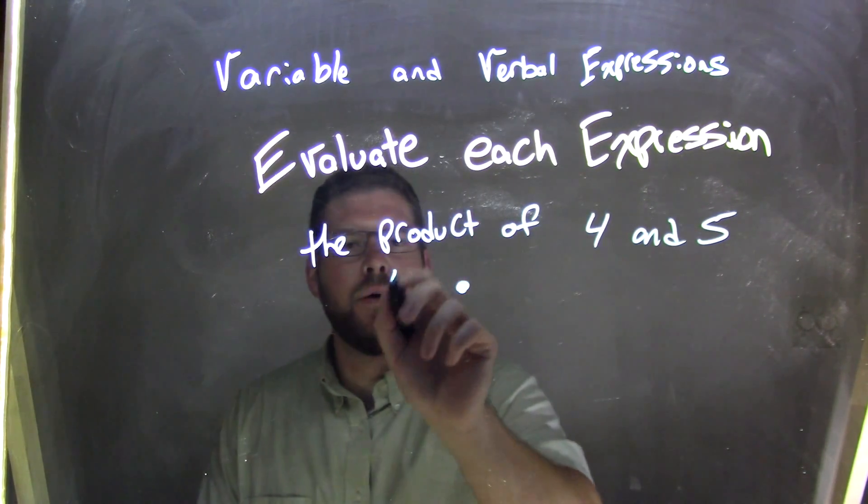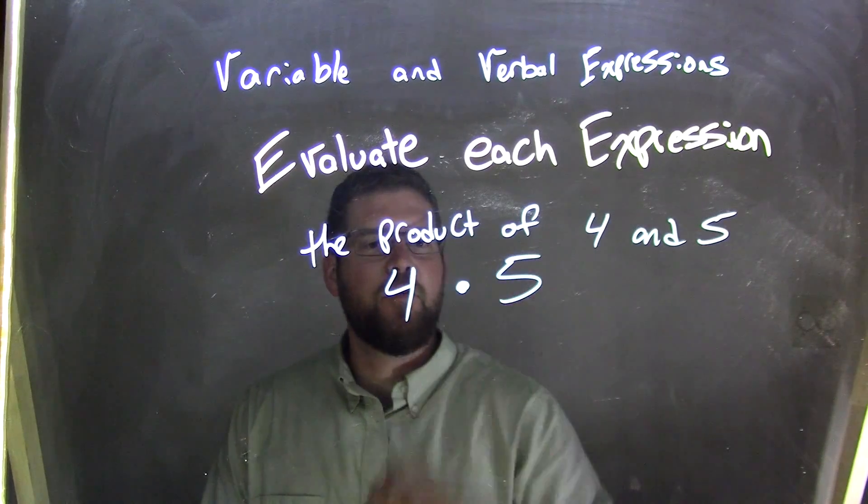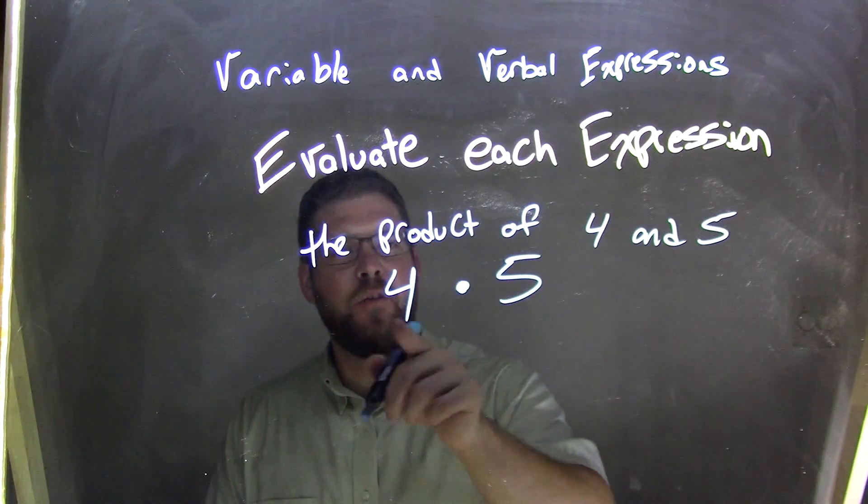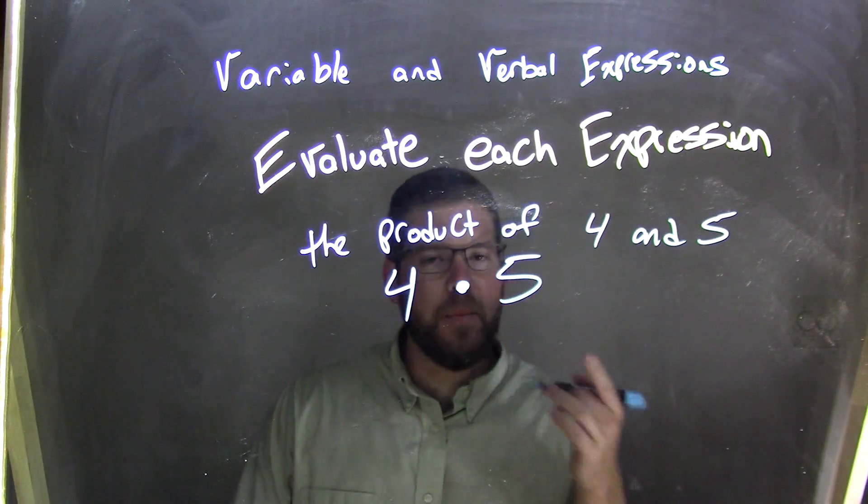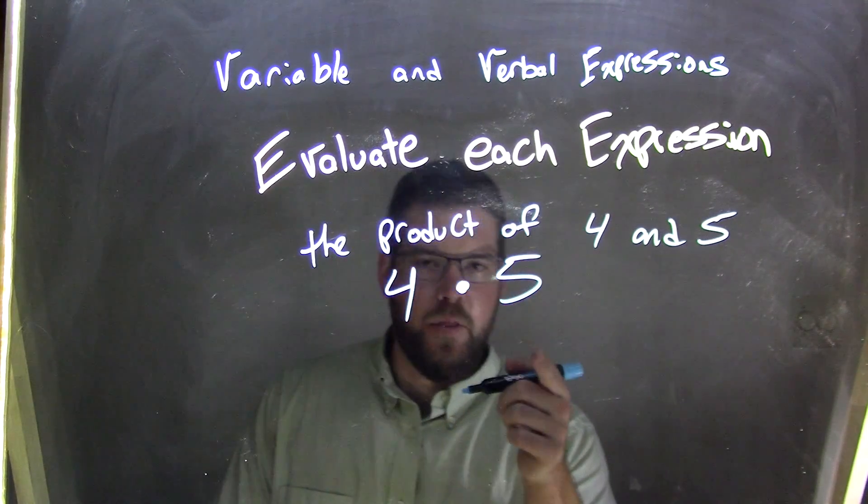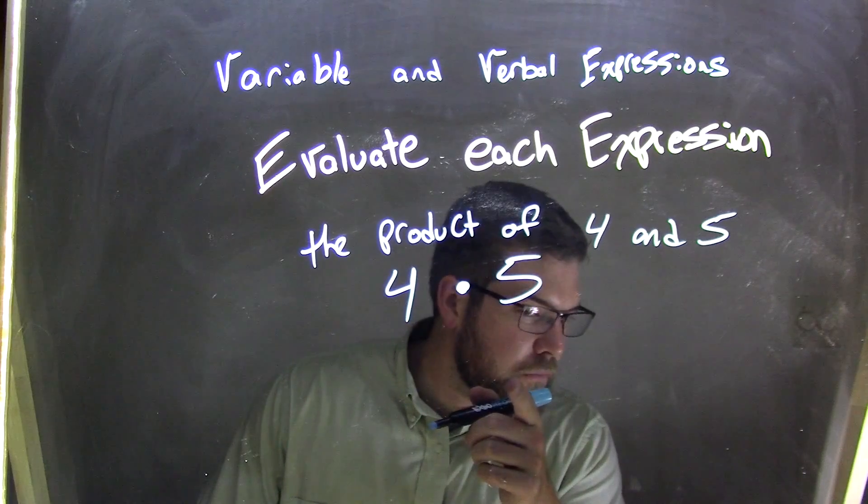The product of four and five. So we have multiplication of four and five. So four times five is, think about it, 20.